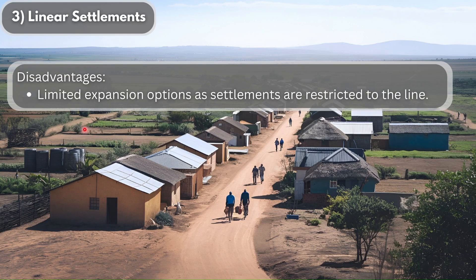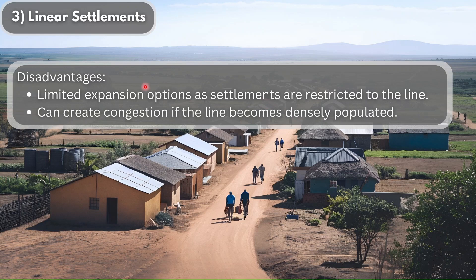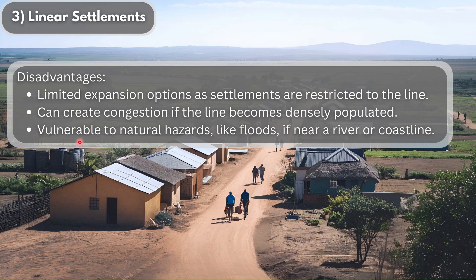The disadvantages of linear settlements include limited expansion options as settlements are restricted to the line, congestion if the line becomes densely populated, and vulnerability to natural hazards like floods if the settlement is near a river or coastline.